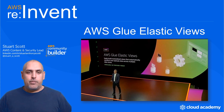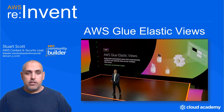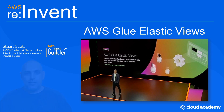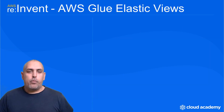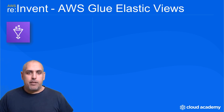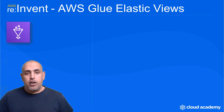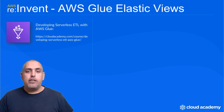As expected, Andy Jassy's announcements during his keynote as he opened re:Invent 2020 came with lots of new announcements — some were new services and some were added features and developments to existing services. In this video I want to talk about AWS Glue Elastic Views, which follows on as a feature of the existing AWS Glue service, which makes it simple and cost effective to categorise your data, clean it, enrich it, and move it reliably between various data sources. If you want to learn more about AWS Glue, you can see our existing course content: Developing Serverless ETL with AWS Glue.